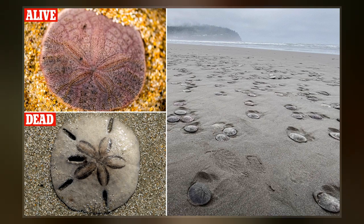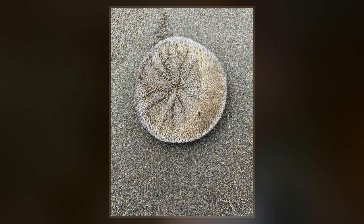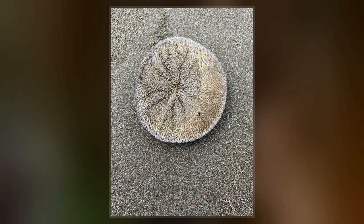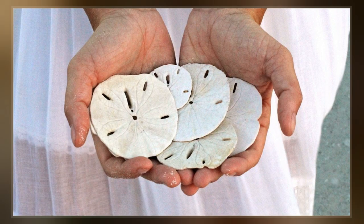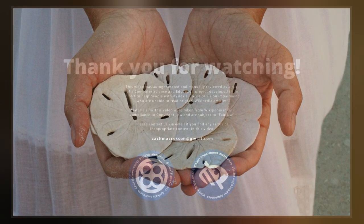The velvety spines of live sand dollars appear in a variety of colors — green, blue, violet, or purple — depending on the species. Individuals which are very recently dead or dying are sometimes found on beaches with much of the external morphology still intact.